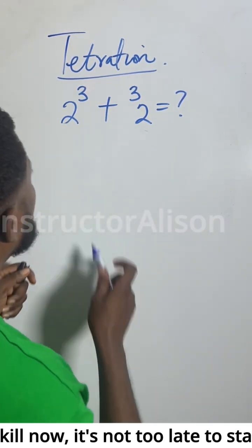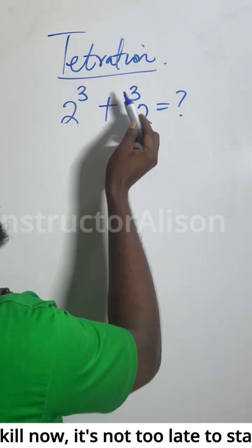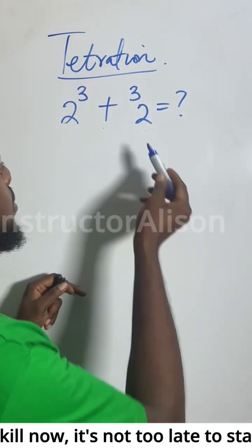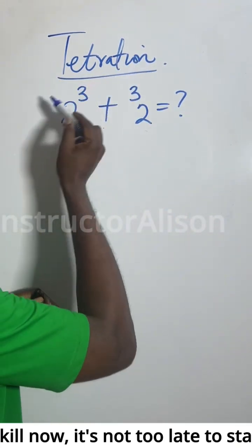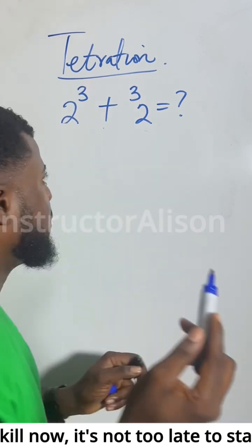First of all, the equation says 2 to the power of 3 plus 2 tetration 3 equal to, what's the answer? This is called tetration. This is called exponent. Put it down for reference purposes.